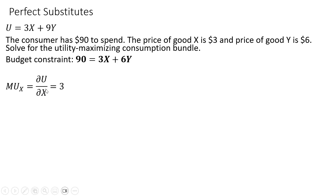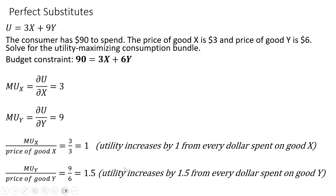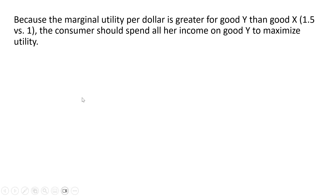The next step is to get the marginal utility of good X, which is just 3, and the marginal utility of good Y, which is just 9. Now I want to take the marginal utility of good X divided by the price of good X: 3 divided by 3 equals 1 — utility increases by 1 from every dollar spent on good X. Similarly, the marginal utility of good Y (9) divided by the price of good Y (6) gives 1.5 — utility increases by 1.5 from every dollar spent on good Y. Because marginal utility per dollar is greater for good Y than good X — 1.5 versus 1 — the consumer should spend all her income on good Y to maximize utility.